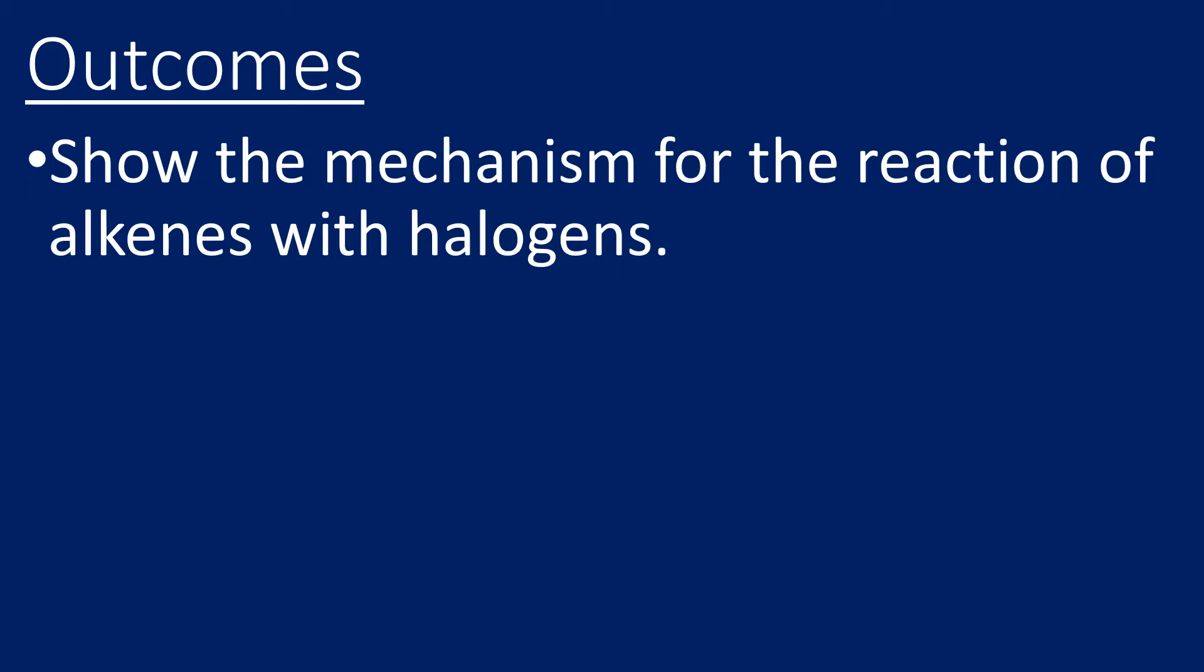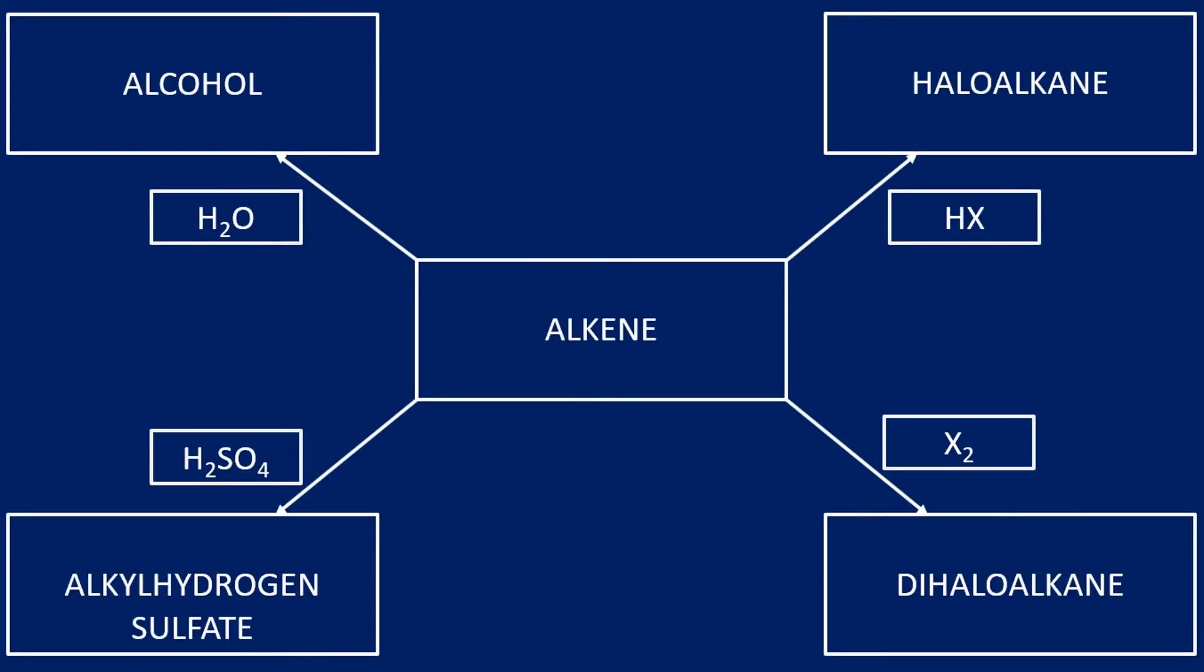So by the end of this video then, you're going to be able to show the mechanism for how halogens react with alkenes. So there are four reactions, and this video is only going to look at this one in the bottom right.